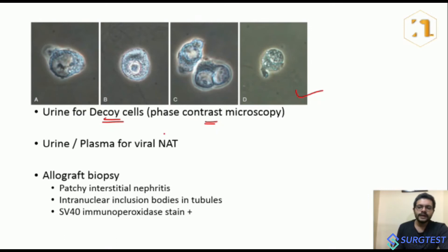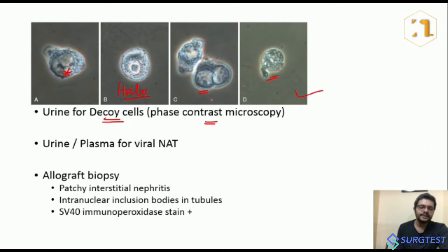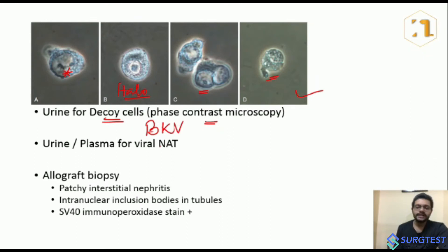The four phenotypes of decoy cells are A, B, C, and D. Type A has a gelatinous ground-glass nucleus. Type B has a nuclear halo, similar to cytomegalovirus. Type C shows binucleate cells, and Type D shows vesicular nuclei. These are the four phenotypes of decoy cells seen in BK virus infection.